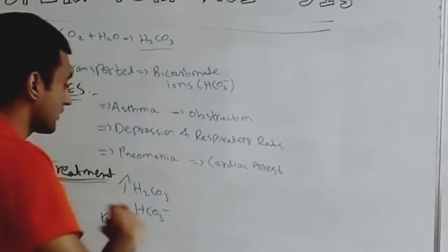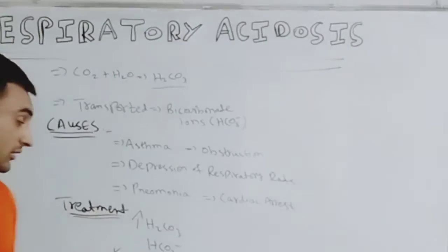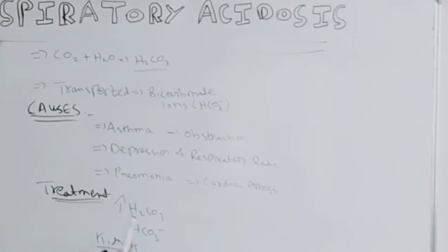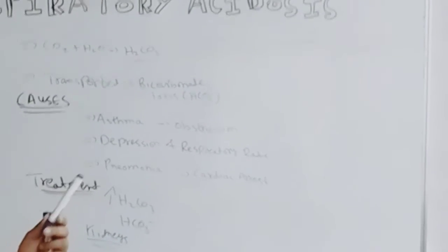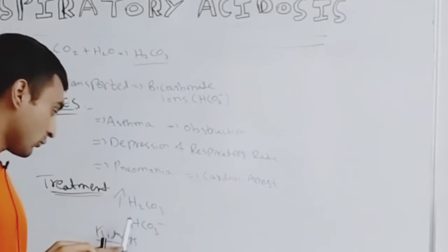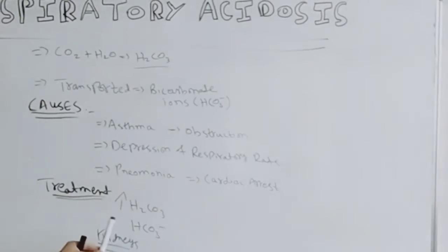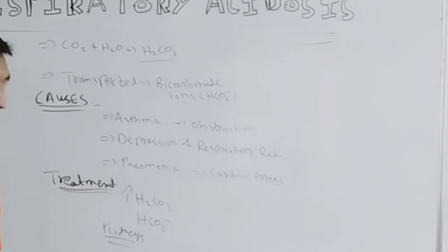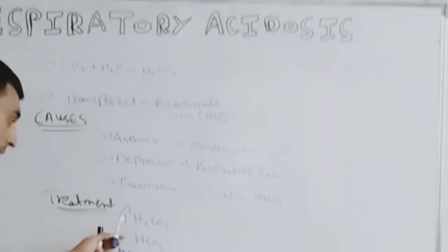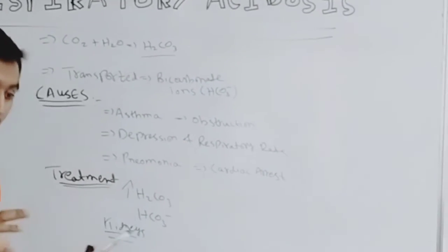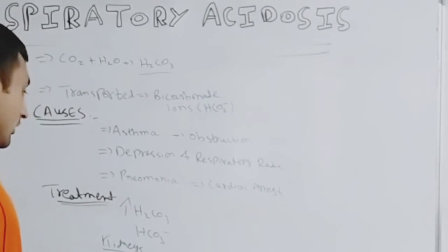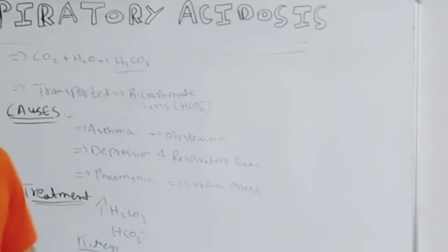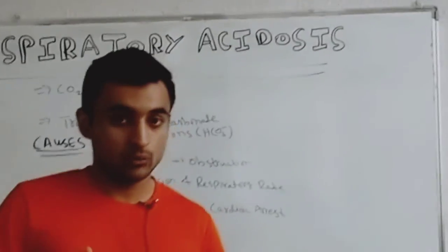The kidneys, by the help of medications, keep the bicarbonate ions constant. The purpose of keeping the bicarbonate ion is to neutralize the effect of the rising carbonic acid. So by keeping the bicarbonate ion concentration constant, the effect of the increased carbonic acid is countered.